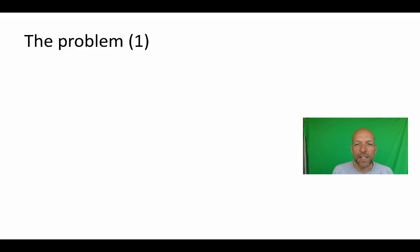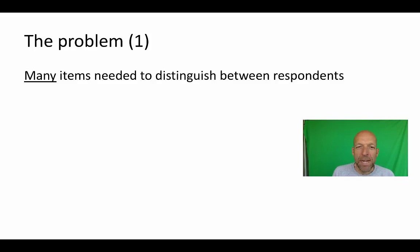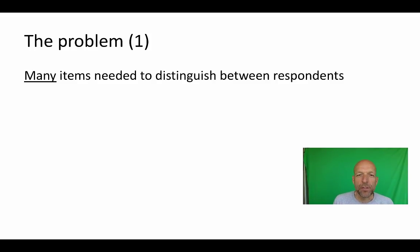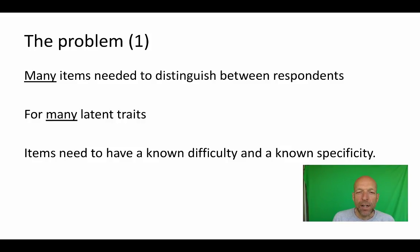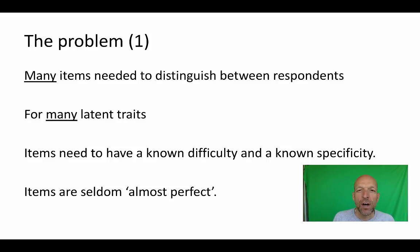What is the problem with this idea? First, we need many many items to distinguish between respondents, and we need that for many latent traits. The items need to have a known difficulty and known specificity, because otherwise we can't use them in an assessment of individuals. Moreover, items are seldom almost perfect, so we need to account for the possibility that someone answers correctly without knowing much, or answers incorrectly while actually scoring very high.